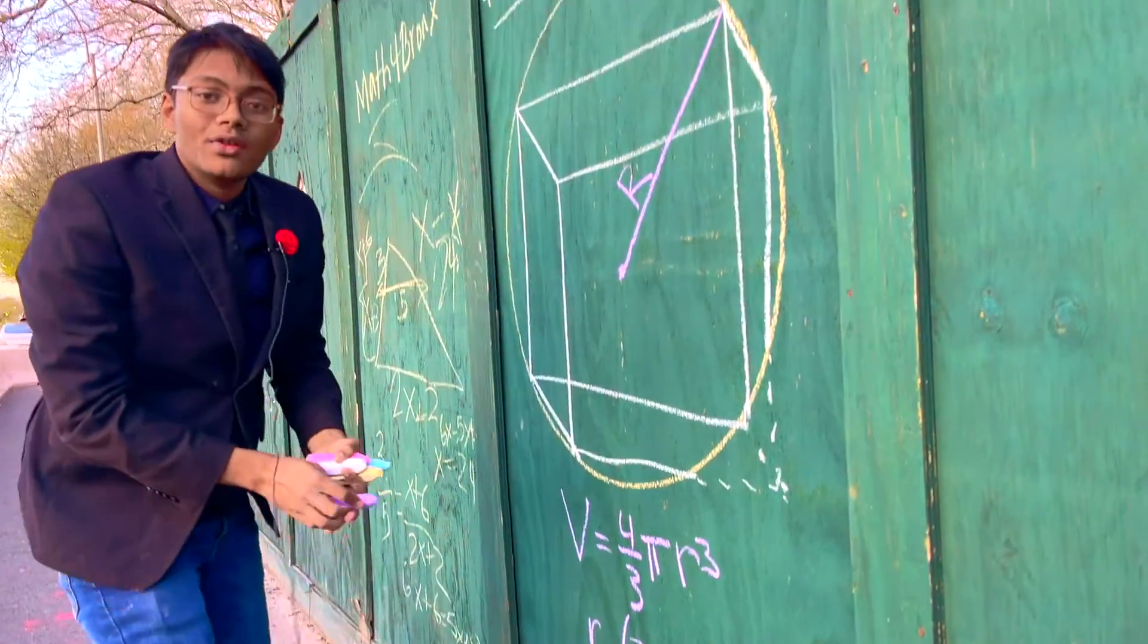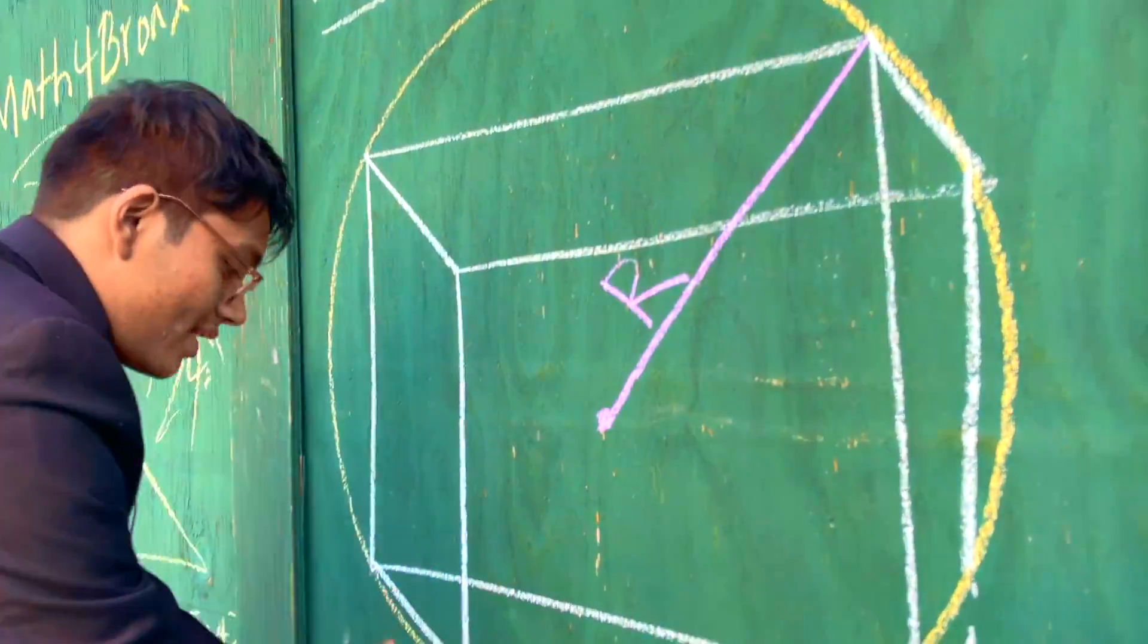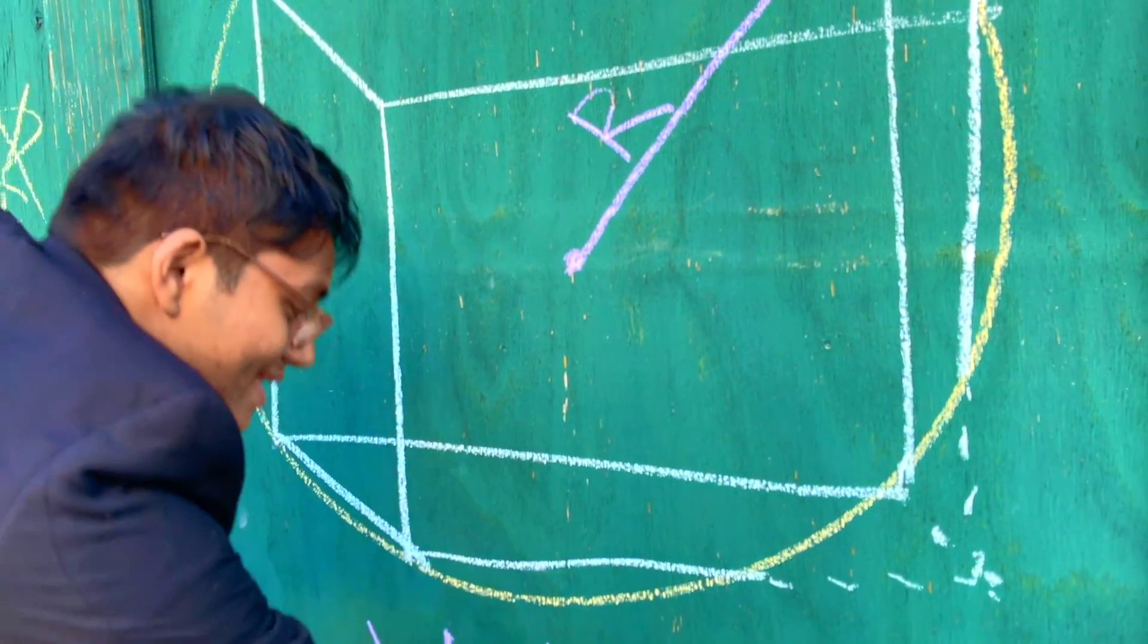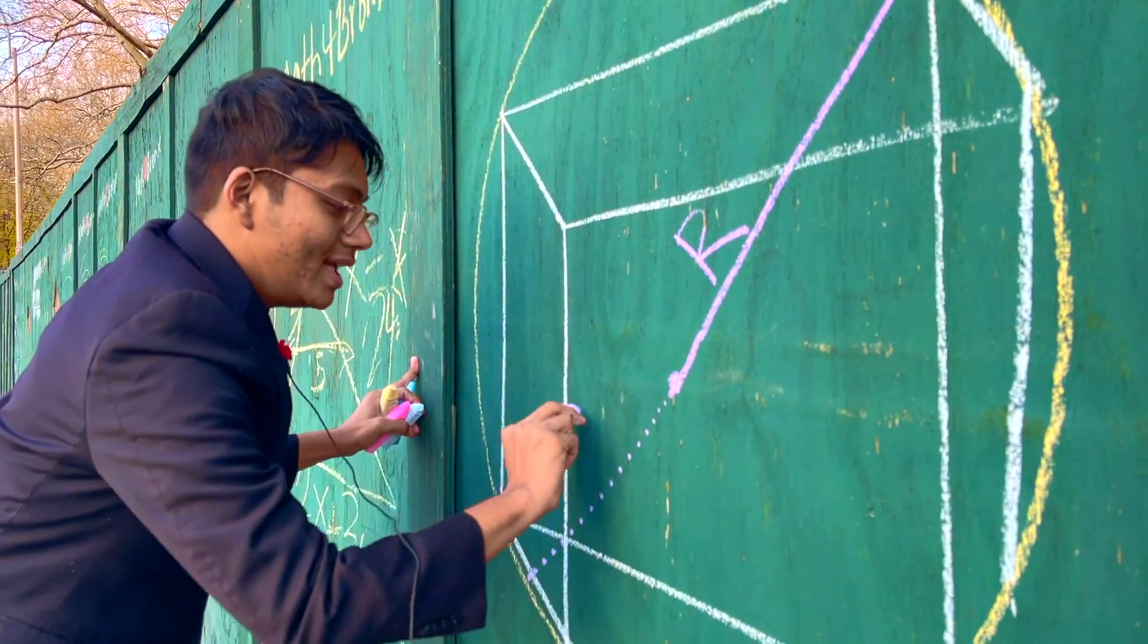And then what can we do? Now it's just simple Pythagorean theorem. If we know that the radius of the sphere is this much, we know what the diameter is as well, right? The diameter is just going to be twice the radius.